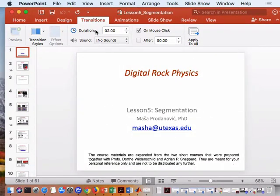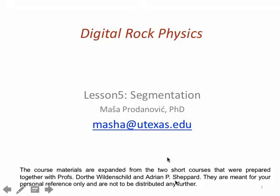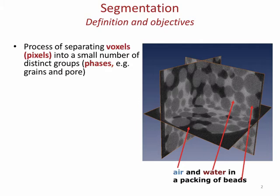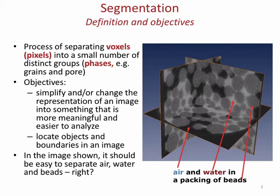Let's get back to our segmentation discussion that we started last time and we will continue today, hoping to get to some practical exercises at the end. As introduced last time, we have images and especially if they're well resolved, we will typically see different groups of grayscales, and they typically mean something — that's something that we image. Here I have three types of relatively homogeneous materials: glass beads, water, and air. I do see some noise in the image but overall my eyes have no trouble recognizing where these fluids are in the pore space.